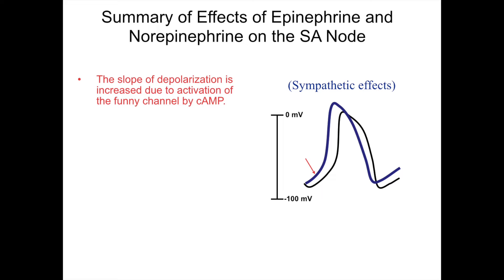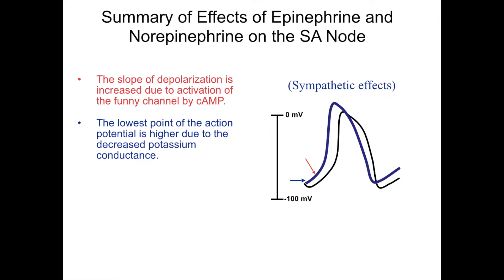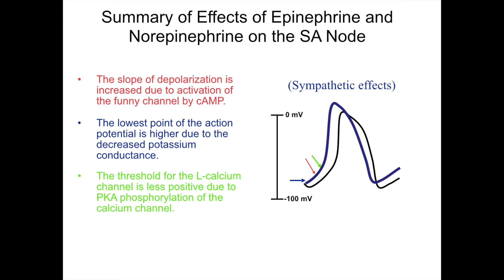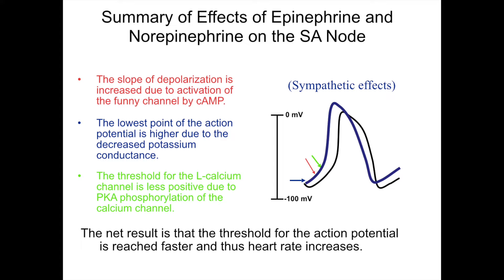In summary, the slope of depolarization is increased due to activation of the funny channel by cAMP. The lowest point of the action potential is higher due to decreased potassium conductance. The threshold for the calcium channel is less positive due to PKA phosphorylation of the calcium channel. So the result is that the threshold for the action potential is reached faster, so that the heart rate can increase.